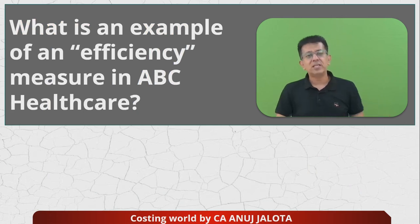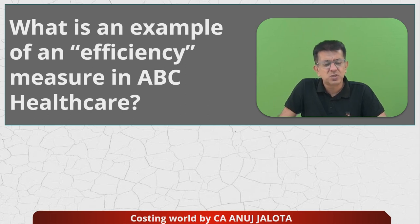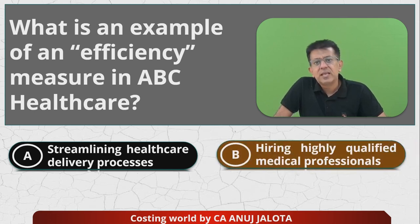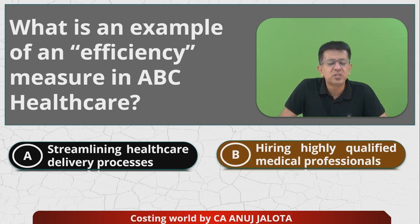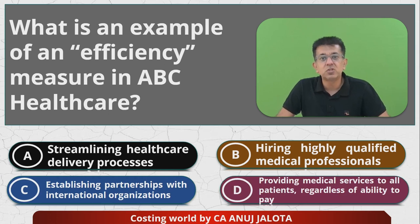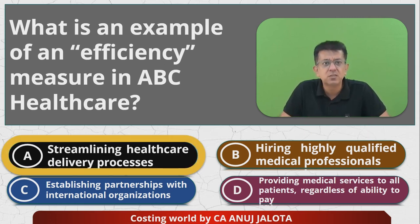MCQ one: What is an example of an efficiency measure in ABC Healthcare? Out of all the points, efficiency was in the delivery process. The four options are: A — streamlining the healthcare delivery process; B — hiring highly qualified medical professionals (this was under effectiveness); C — establishing a partnership with an international organization (also effectiveness); D — providing medical services regardless of ability to pay (also effectiveness). So the answer is A — that is the correct answer.